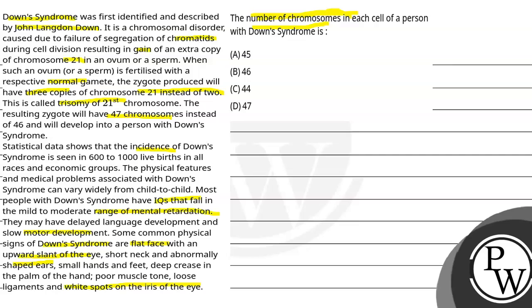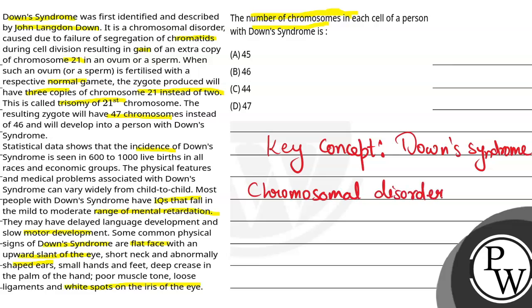So let's understand the key concept here. Our key concept will be Down syndrome. Down syndrome is a chromosomal disorder. So let's try to understand what I am trying to say here.